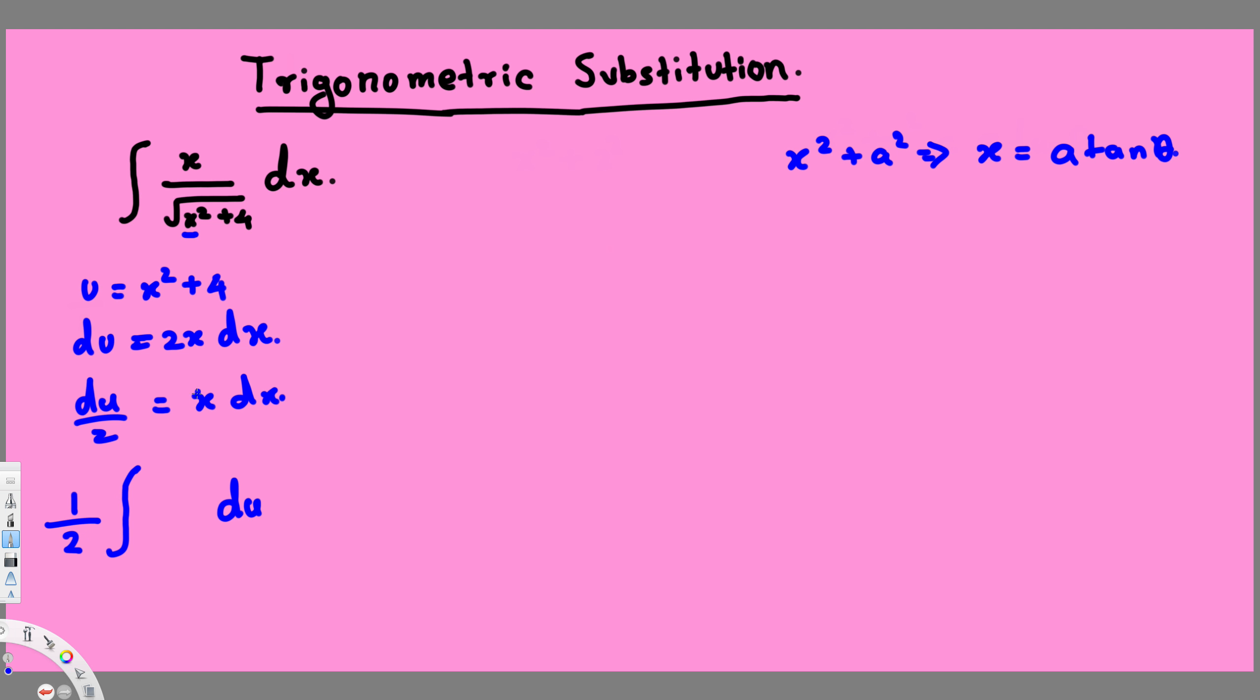We can move this 1 over 2 to the front, and then we have square root of x squared plus 4. We have x squared plus 4 right here, so this is basically 1 over root u. So instead of putting root, we can put u power half. u power half and root are the same thing.